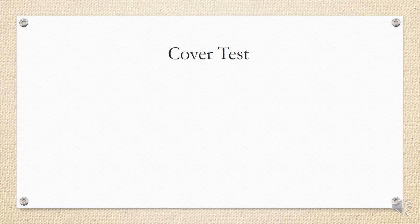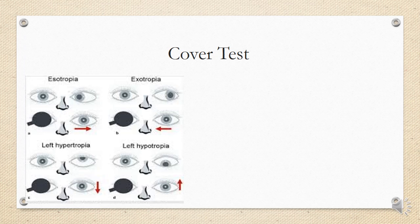The cover test is the first test done in every clinic. It tells us if there is a manifest or latent deviation, the type of deviation, and which eye is the normal fixing eye. We perform all three: direct cover test, cover-uncover test, and alternate cover test. In incomitant squint, you will generally find a manifest deviation, and when you occlude the affected eye, the primary deviation is less compared to the secondary deviation.